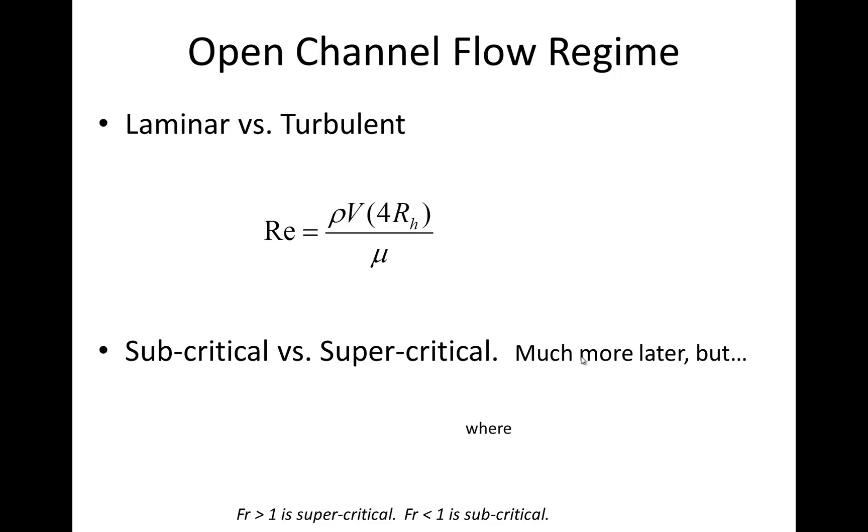And of course, since we don't have a diameter, we make substitutions that are based on the hydraulic radius, and we talked about that differentiation previously in the context of non-circular conduits. So you can classify flow as laminar or turbulent, and the Reynolds number breakpoints are the same as they were in pipe flow. But because open channel flow is open to the atmosphere and there can be a variety of different depths for a certain specific energy, we can also classify flow as subcritical versus supercritical.